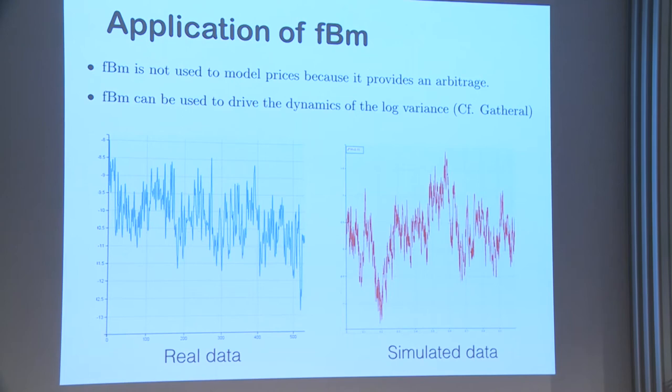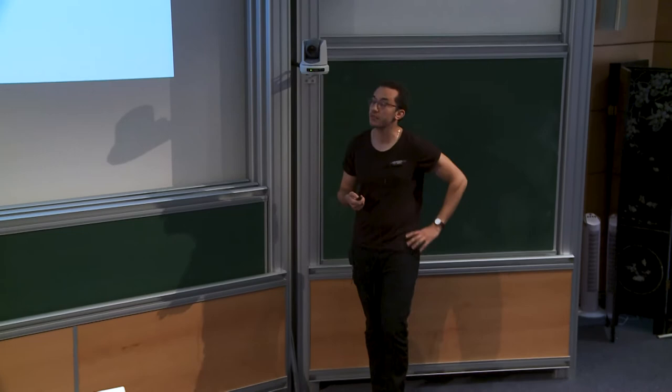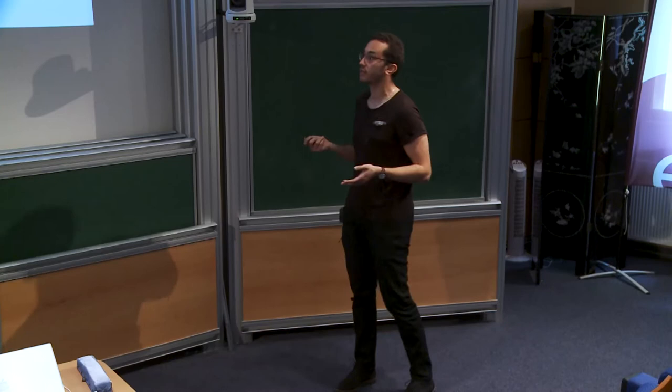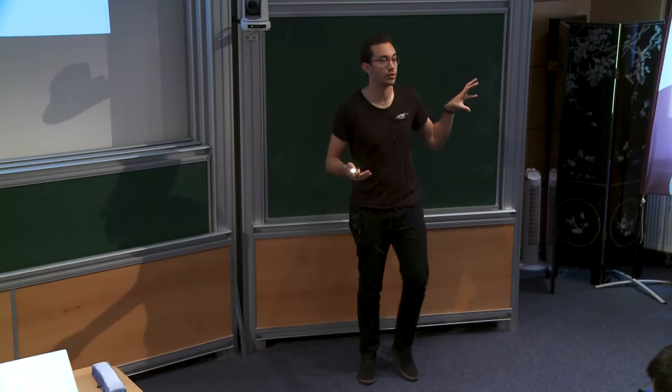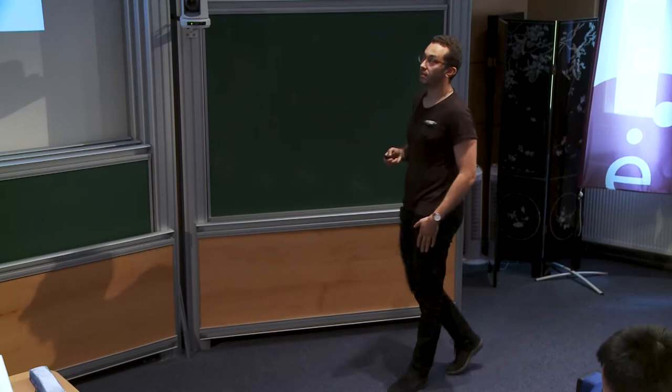The problem in practice is simulation — we don't have efficient tools to simulate fractional Brownian motion. If you want to simulate a Gaussian process with non-independent increments, the first approach is Cholesky decomposition: take the covariance matrix, compute its square root, and multiply by independent Gaussian variables. The problem is that diagonalizing a matrix has O(n³) complexity, which is quite costly.